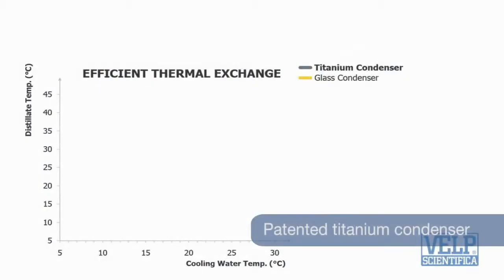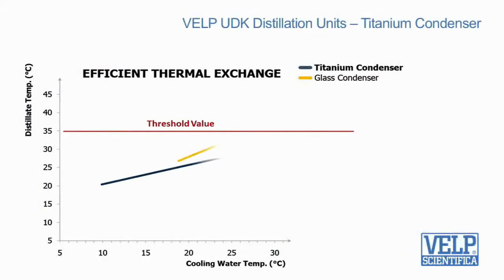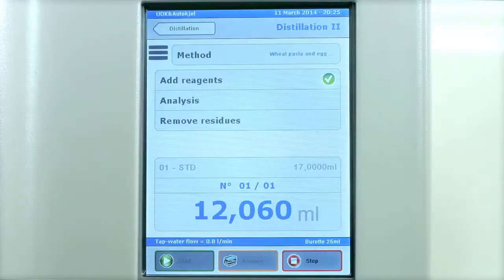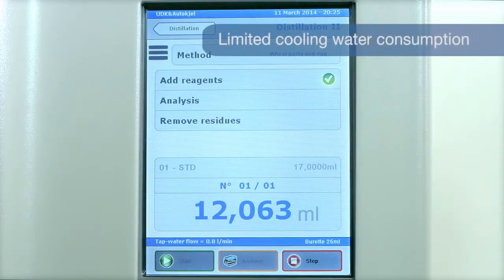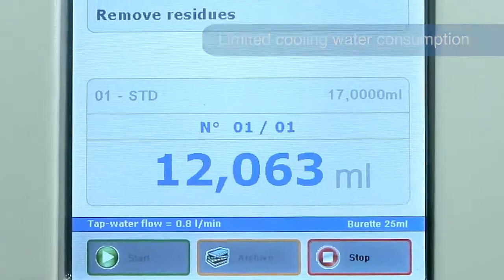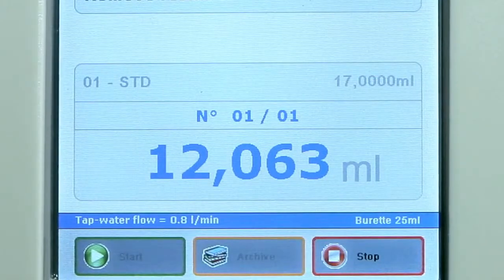The titanium condenser ensures precise determination since the distillate temperature always remains below the threshold value for total nitrogen recovery. In addition, it offers the lowest cooling water consumption starting from only 0.5 litres per minute.